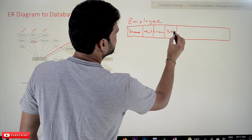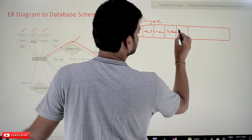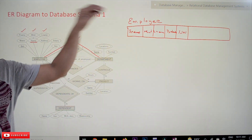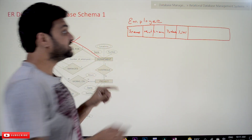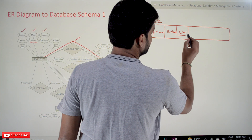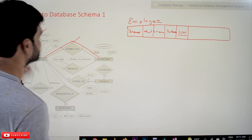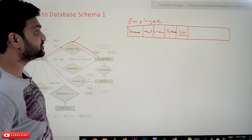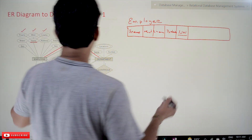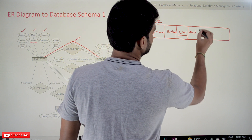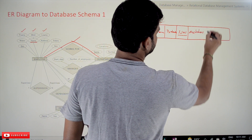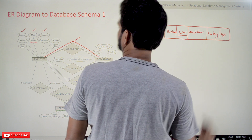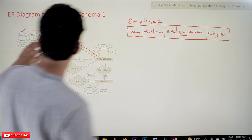The other attributes of the Employee relation are: Bdate, SSN — which is a key attribute, represented with an underline just as it is underlined in the ER diagram — Address, Salary, and Sex. So these are all the attributes of the Employee relation.